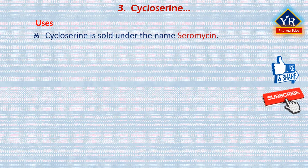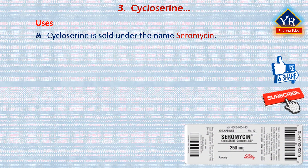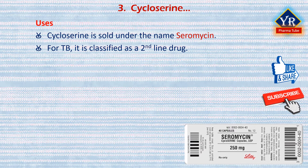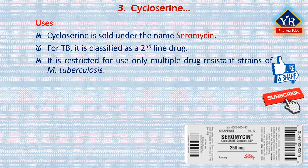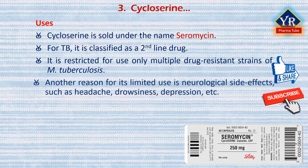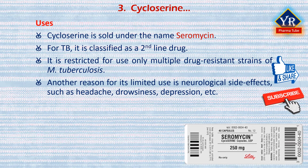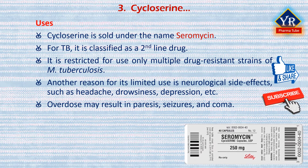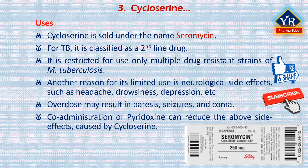Cycloserine is sold under the brand name Seromycin. For the treatment of tuberculosis, cycloserine is classified as a second-line drug — its use is only considered if one or more first-line drugs cannot be used. Hence, cycloserine is restricted for use only against multiple drug-resistant and extensively drug-resistant strains of mycobacterium tuberculosis. Another reason for its limited use is the neurological side effects it causes, since it is able to penetrate into the central nervous system and cause headaches, drowsiness, depression, dizziness, vertigo, confusion, hyperirritability, psychosis, convulsions, and shaking. Overdose may result in seizures and coma, while alcohol consumption may increase the risk of seizures. Co-administration of pyridoxine can reduce the incidence of some of these CNS side effects, including convulsions. It is given by mouth.